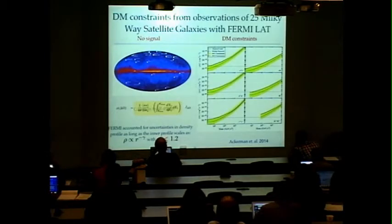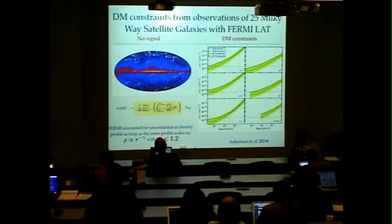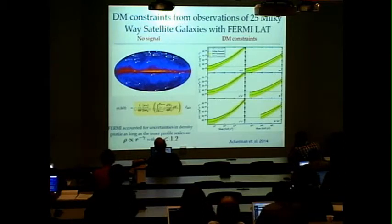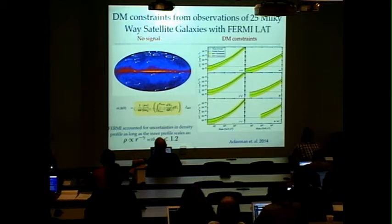And with this technique they do a joint analysis for 15 of the dwarf spheroidal galaxies where the particle physics factor is common to all of them and the astrophysical factor was set by this other technique. And they find that their constraints are not very dependent on the density profile as long as the slope is lower than 1.2.